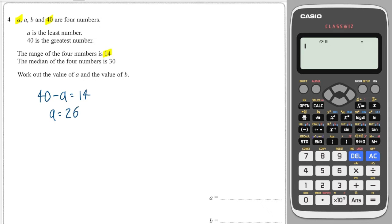So a must equal 26. And the median is the middle number. In this case, there are two numbers in the middle, so we have to take the average of those two numbers and we're told that's equal to 30. So that means a plus b divided by 2 must equal 30.